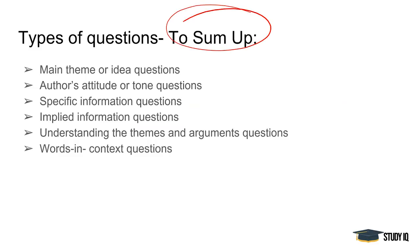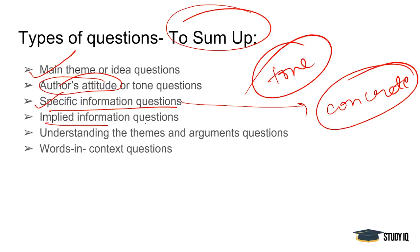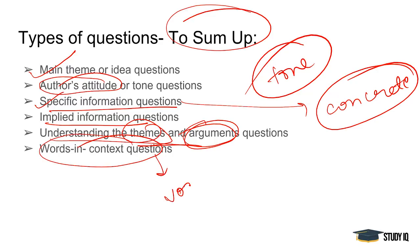The important question types in RC include: main theme or idea questions, author's attitude and tone questions (mildly disturbed, enraged, etc.), specific information questions asking concrete details, implied information questions where less obvious things must be inferred, questions understanding themes and arguments, and vocabulary and context questions. A good strategy is skimming the questions once and then revisiting the passage. Now let's try to solve a passage together.